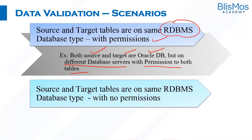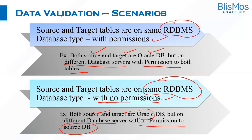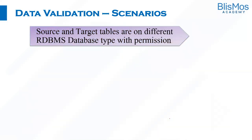The next scenario is where source and target tables are on the same RDBMS but the testing team does not have permissions to the source. For example, source and target tables are in Oracle DB but on a different database server, with no permission to the source DB. The testing team has permission to the target DB but does not have permission to the source DB.